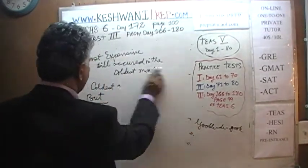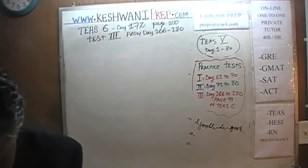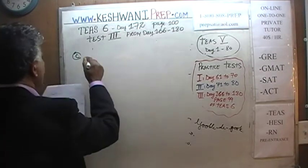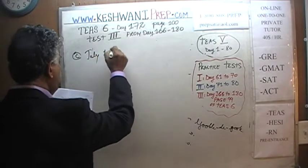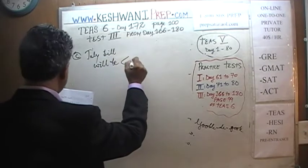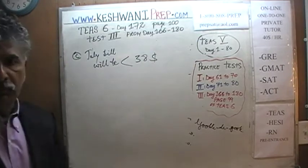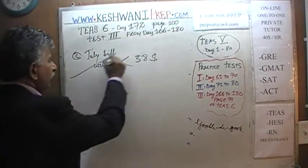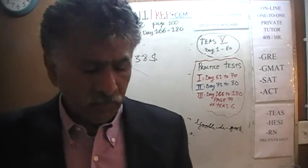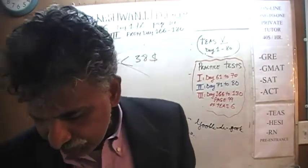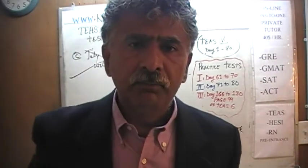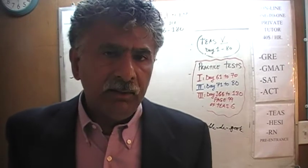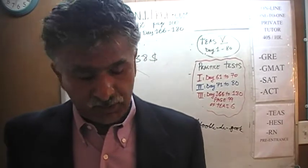Let's look at answer choice C. Answer choice C says the July bill will be less than $38. How on earth do we know that? The answer is we do not. There is no way for us to make that kind of assertion — there is nothing in the figures that leads us to believe the July bill will be $38 or less. Let's look at D.